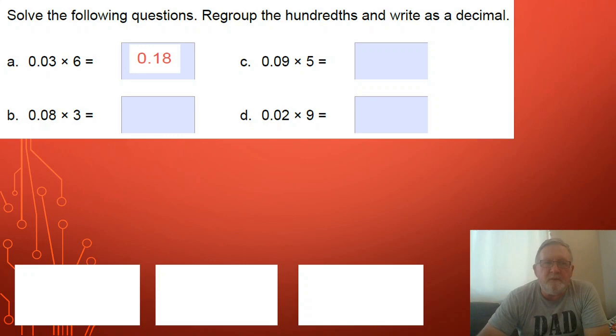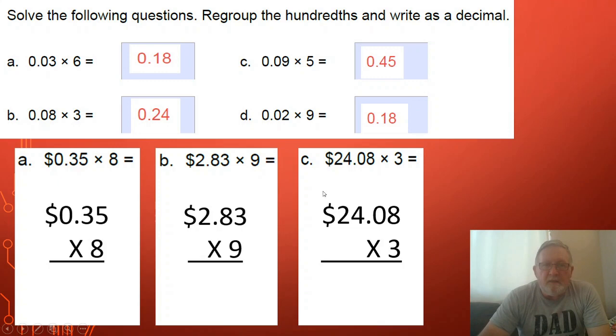Have a quick go at those next three. Three eighths are 24, so three lots of eight hundredths is 24 hundredths. Five nines are 45, so five times nine hundredths is 45 hundredths. Nine twos are 18, and again 18 hundredths.